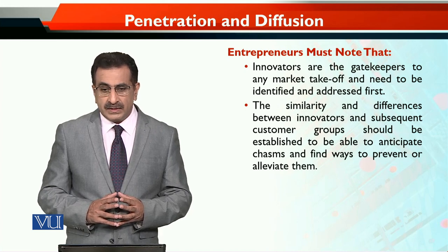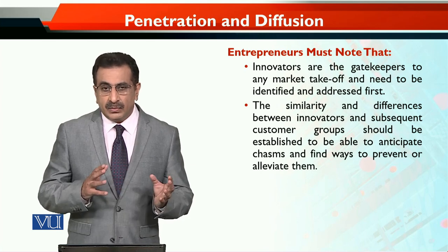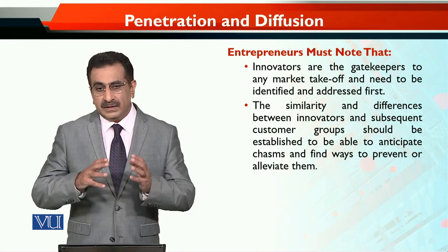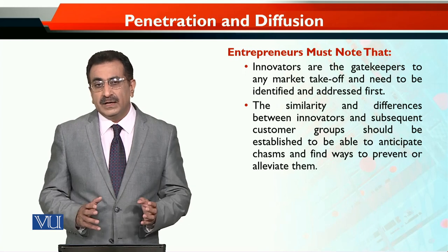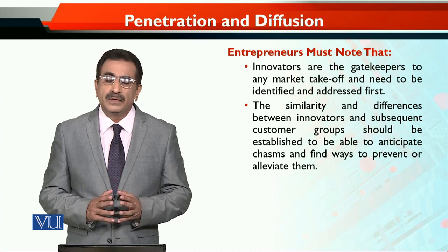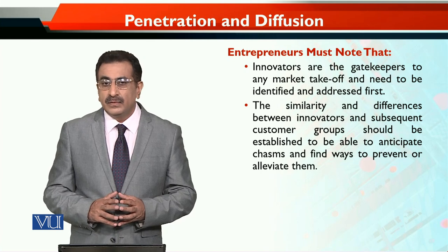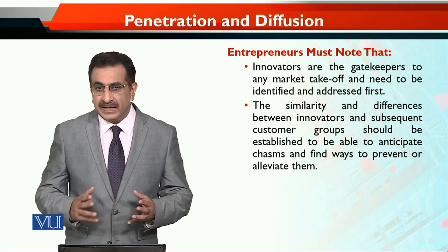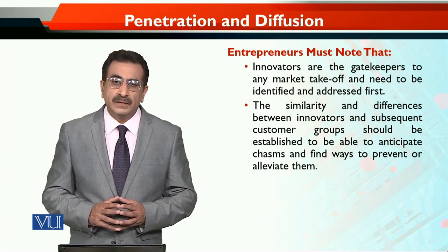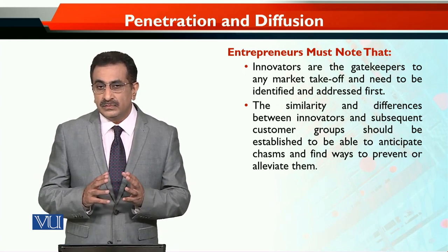The similarity and differences between innovators and subsequent customer groups should be established to be able to anticipate gaps and find ways to prevent or alleviate them. پہلے innovators کی تلاش کریں، ان سے relate کریں، انہیں engage کریں، اپنی product try کرائیں، feedback لیں اور ان کے ساتھ co-develop کریں۔ لیکن ذہن میں رکھیں کہ innovators بہت proactive اور appreciating ہو سکتے ہیں — لیکن how they are different from other groups یہ بھی سمجھنا ضروری ہے۔ باقی سارے groups کو innovators کی طرح سمجھنا غلطی ہوگی — ان کے differences کو underestimate نہ کریں۔